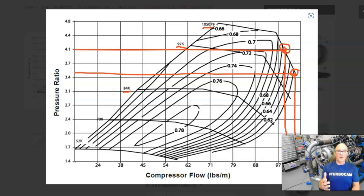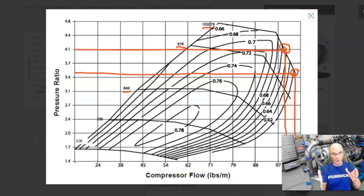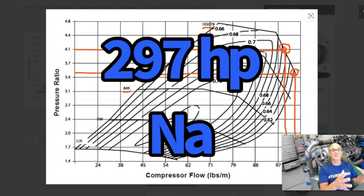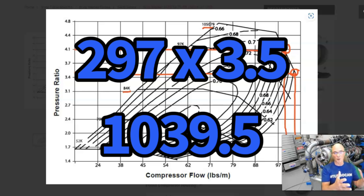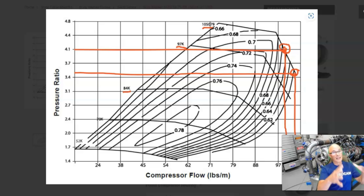So if you can't just turn the boost up to make more power, how do you get that power output at the right boost level? The way you do that is combine this turbo with the right size naturally aspirated combination, using the Holdner power boost formula. That way we make that airflow and power output at that boost level by starting with the right NA combination.